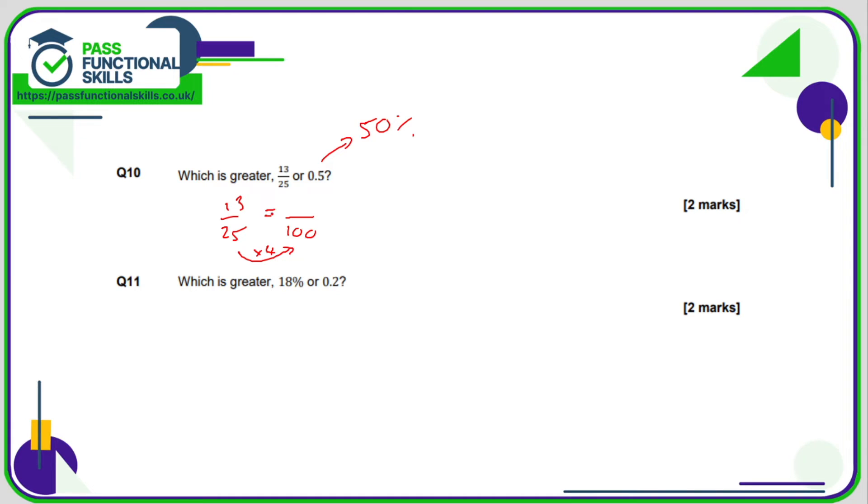So for an equivalent fraction we need to multiply the top by 4 as well and 13 multiplied by 4. 3 times 4 is 12, carry the 1. 1 times 4 is 4 plus the 1 is 5. So 13 out of 25 is the equivalent to 52 out of 100 which is 52%. 52% is obviously bigger than 50% so therefore 13/25 is greater than 0.5.